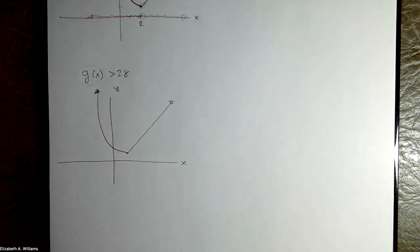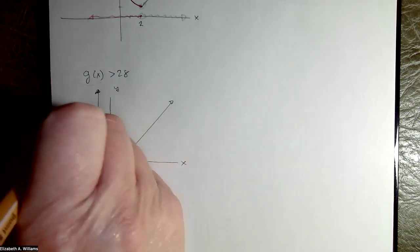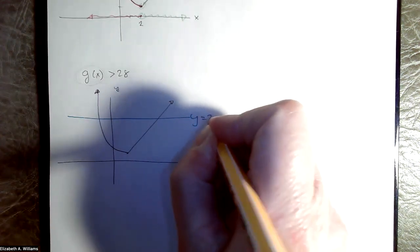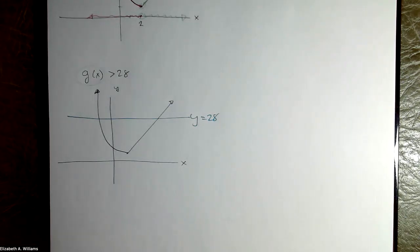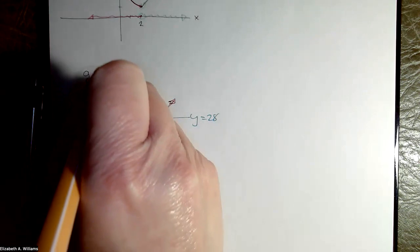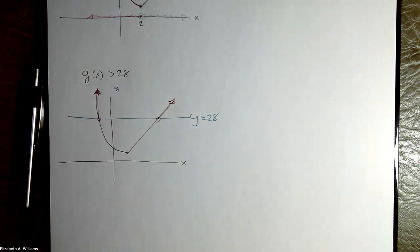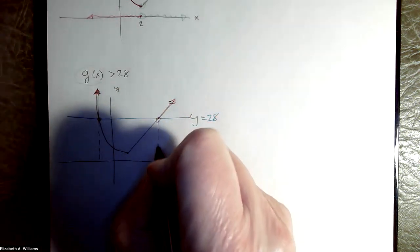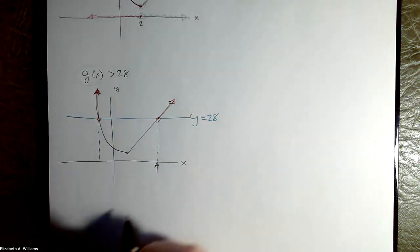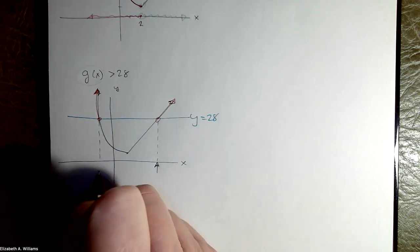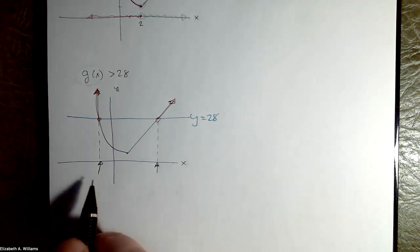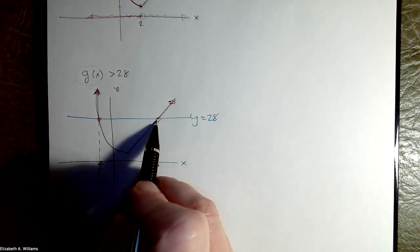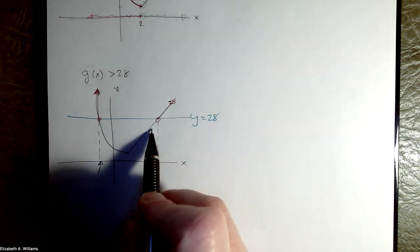Okay, so if I want to know where this function exceeds 28, where all the values of the function, the y values, exceed 28. Here's my line, not in green, I'll use blue. Here's the line y equals 28. You'll have to pretend that that's horizontal. Okay, so it's these bits of the graph where the y values are more than 28. And I want to know the x values that make that happen. So that's kind of like the boundary x's, right? At these x values is where g of x actually equals 28.